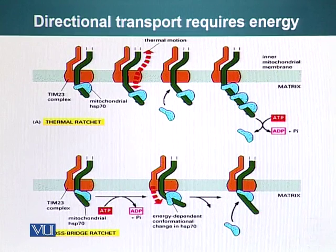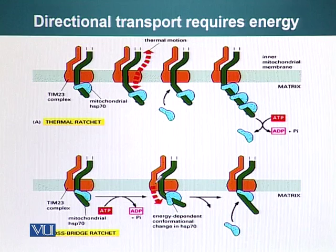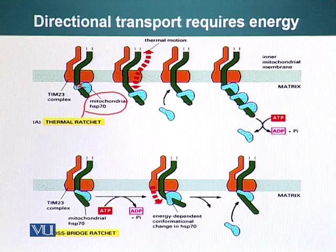One is the thermal ratchet model and the other is the cross-bridge ratchet. In the thermal ratchet model, the protein passes through the TIM23 channel, and as soon as it emerges from the pore, HSP70 present in the mitochondrial matrix binds this protein and prevents it from sliding back out. Thermal energy refers to the average kinetic energy of the molecules.